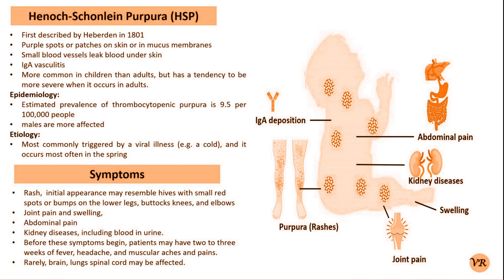Diagnosis of HSP is typically based on the characteristic combination of symptoms: purpura, joint pain, abdominal pain, and renal involvement. Blood tests may show elevated levels of serum IgA and other markers of inflammation. Urine analysis can reveal abnormalities like hematuria and proteinuria. A skin biopsy can confirm the diagnosis by revealing the deposition of IgA in the blood vessels.